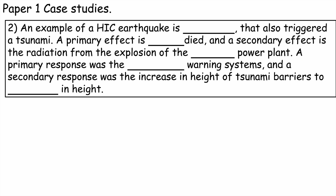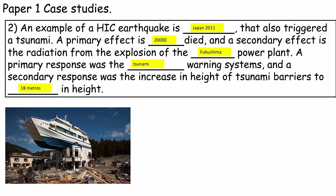Number two: an example of a HIC earthquake is Japan 2011, which also triggered a tsunami. A primary effect is around 20,000 people died, and a secondary effect is the radiation from the explosion of the Fukushima power plant. A primary response was that the tsunami warning systems ensured people were safe and could evacuate. A secondary response was increasing the height of tsunami barriers to 18 metres. Here we can see a boat that landed on top of a house after the tsunami wave washed it there and then drained away.